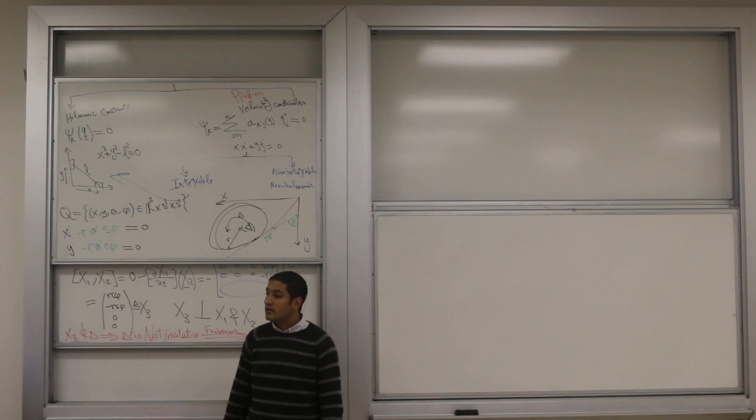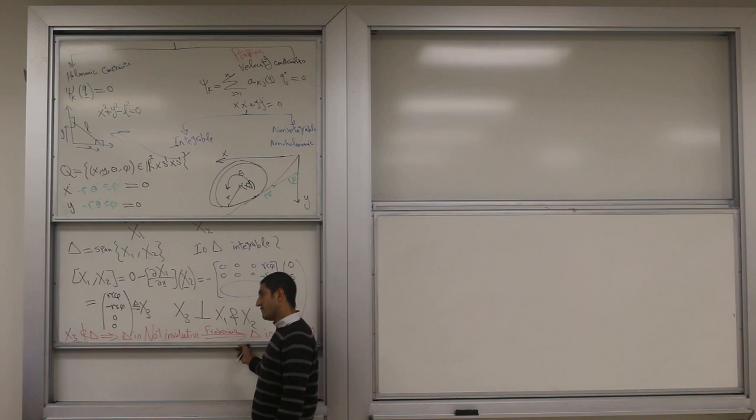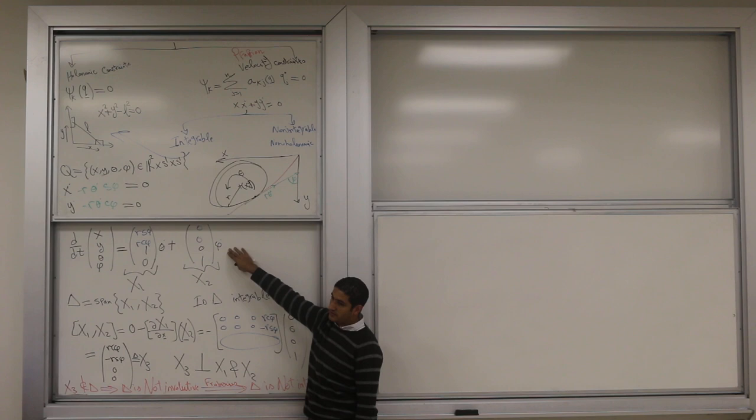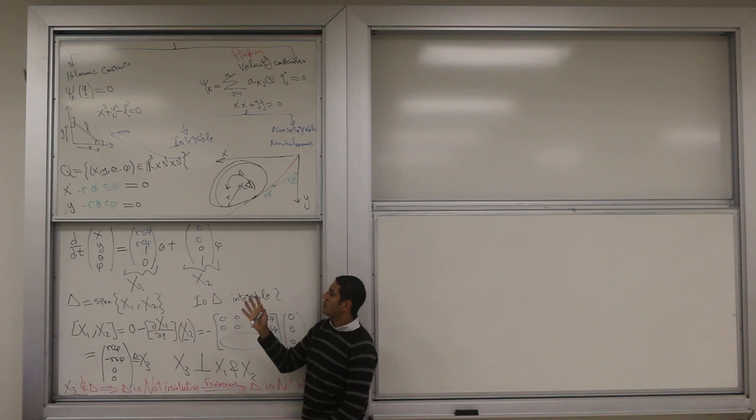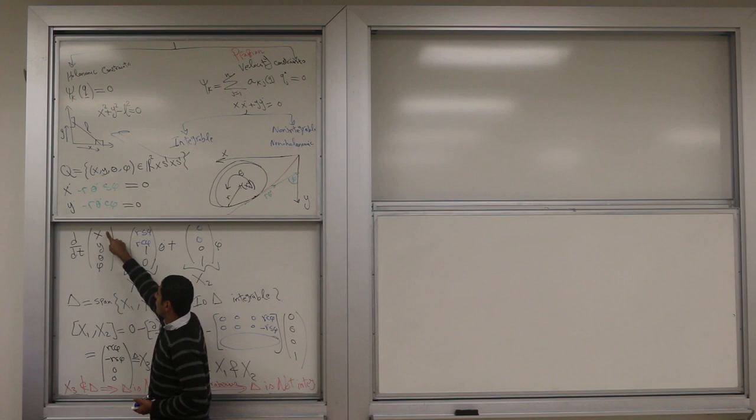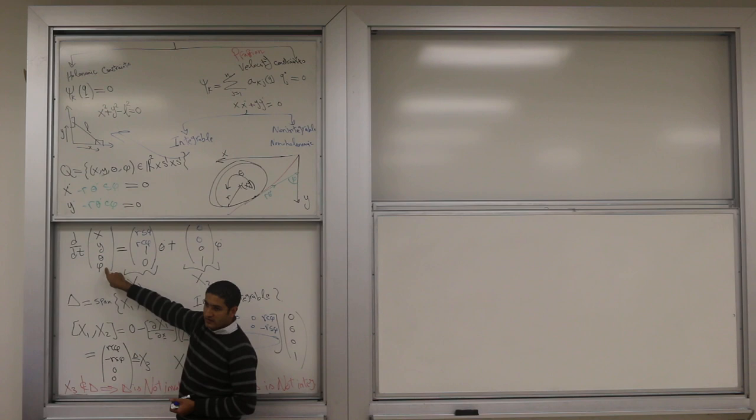Student asks: I'm not sure how we define x1 and x2, why are we interested in the span of x1 and x2? This is a very good question. Do you agree with this equation? What does this equation look like? d by dq for all my coordinates. These are all the velocities, right?